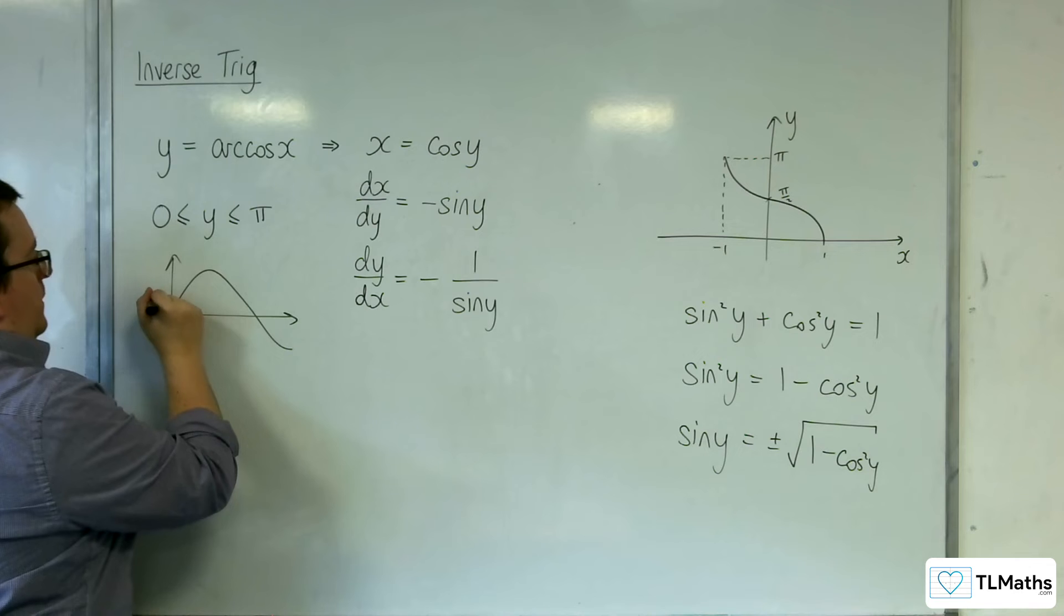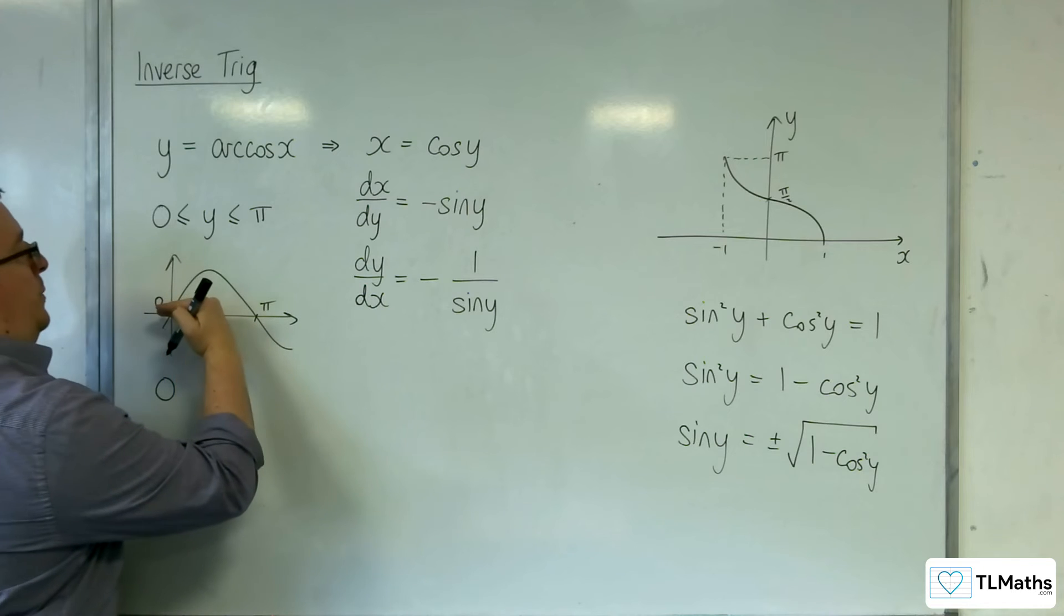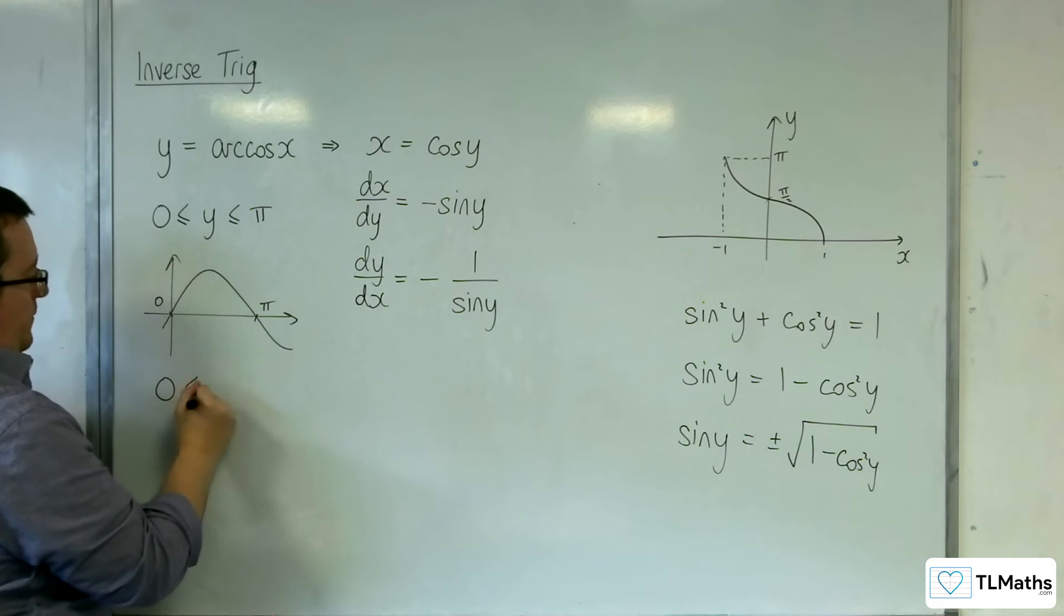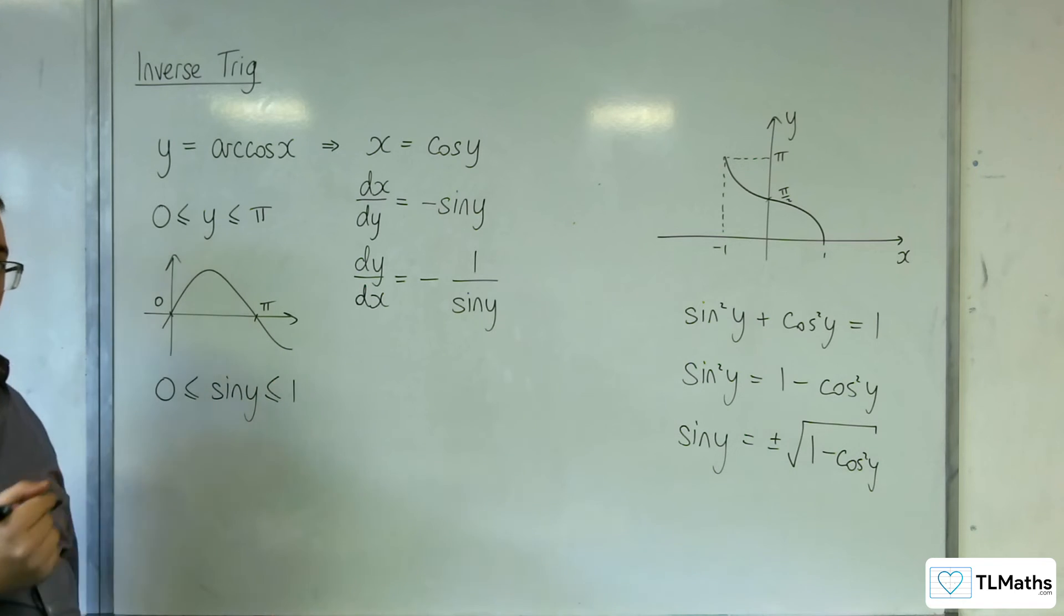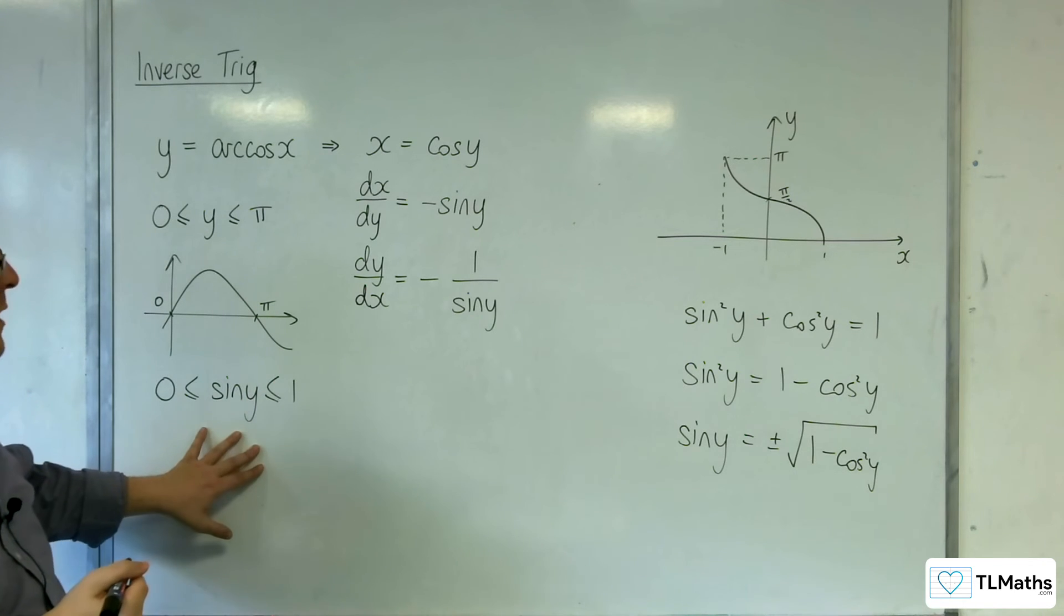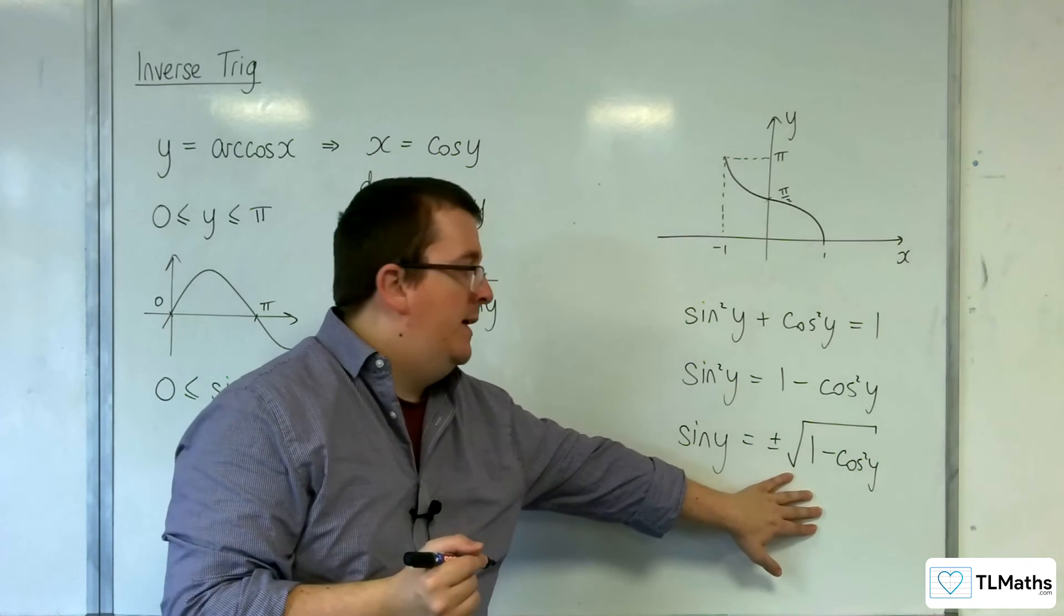Now, sine of y between 0 and pi looks like this. So sine, it goes between 0 and 1 for those values of y. So sine of y is positive. So that is why we're going to take the positive square root here.